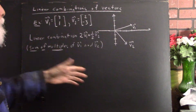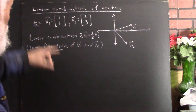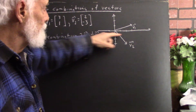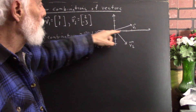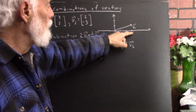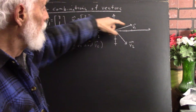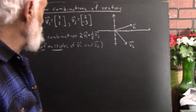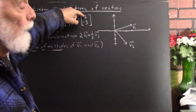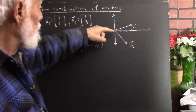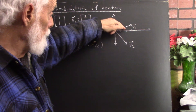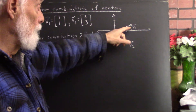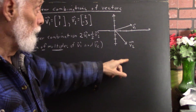We can represent the vectors geometrically. Vector v1 can be represented by the vector whose x-component is 3 and whose y-component is 1 — so that would be over 3 in the x-direction and up 1 in the y-direction. V2 is represented by (2,-3): over 2 units in the x-direction and negative 3 units in the y-direction. So there's vector v1 and here's vector v2.